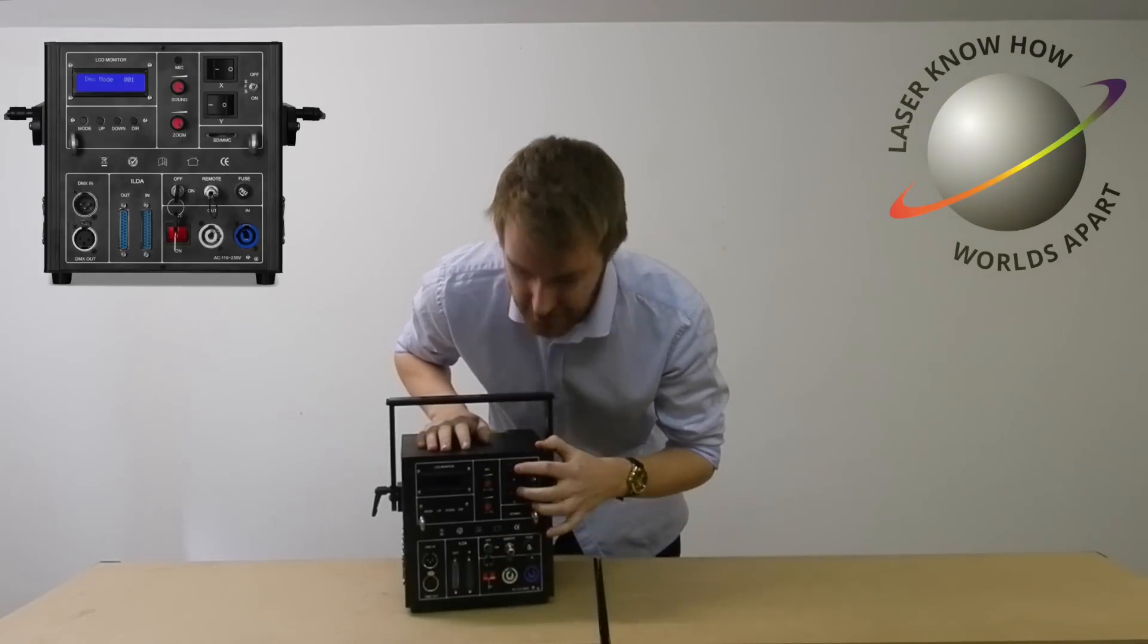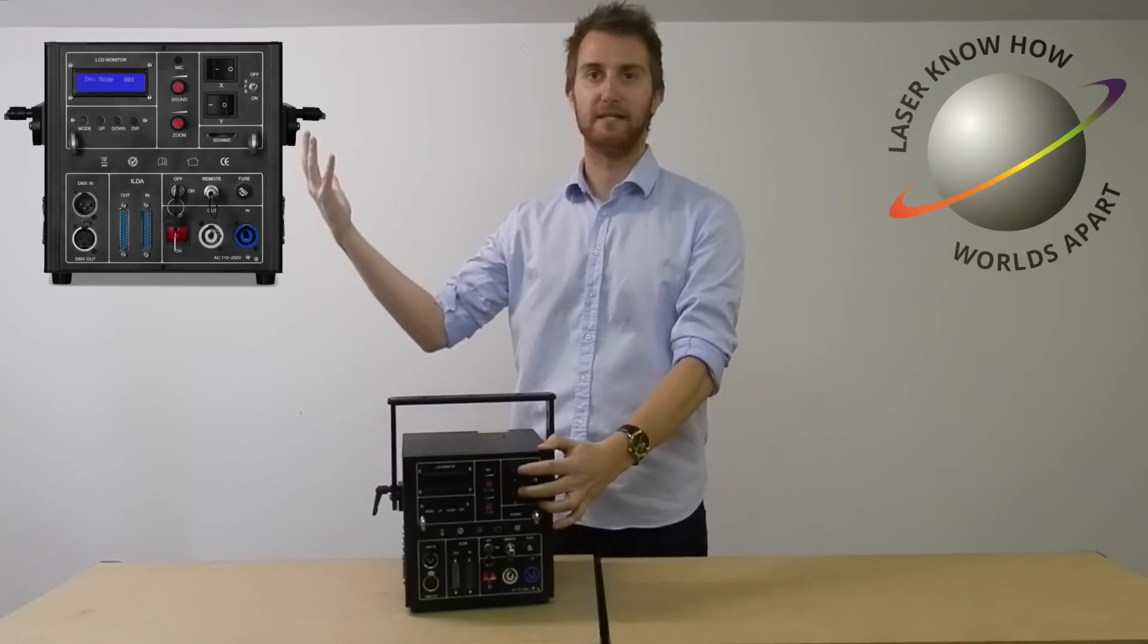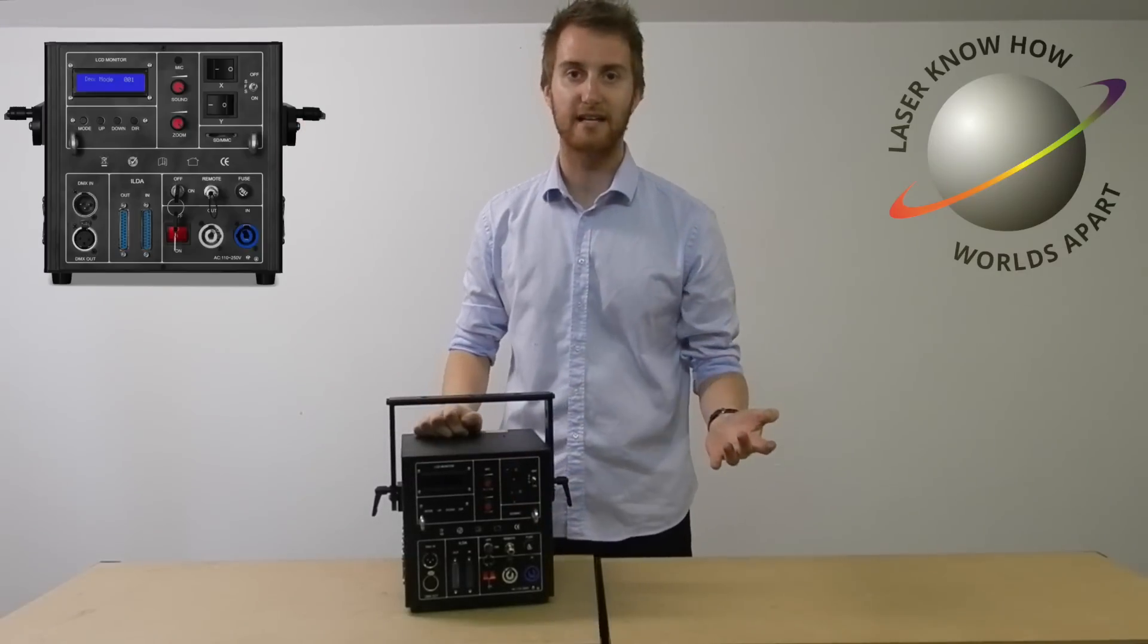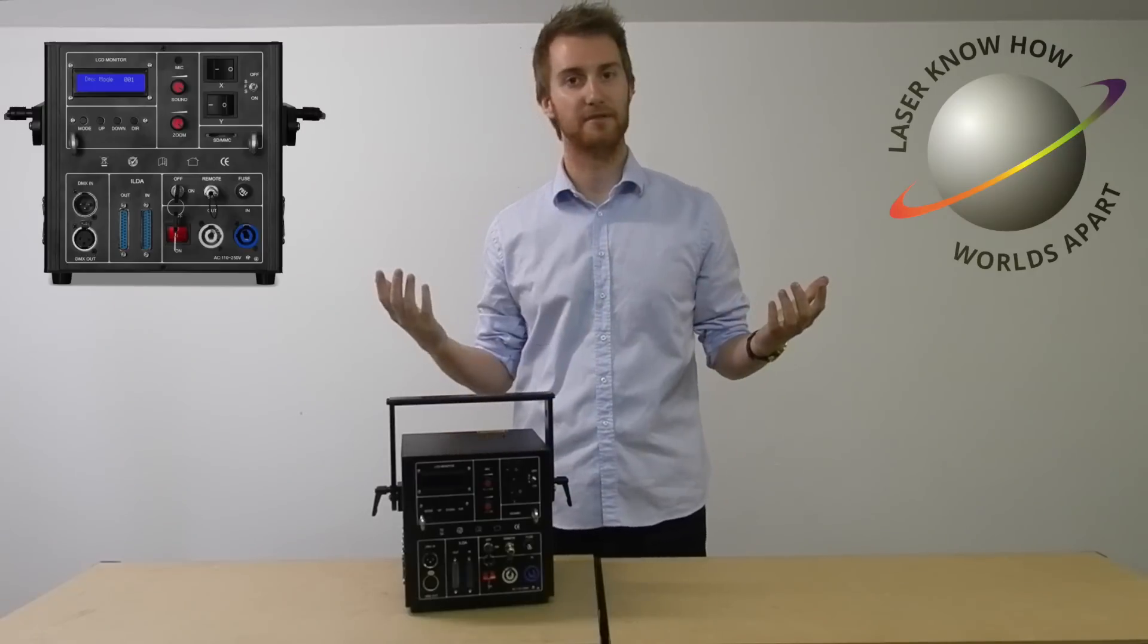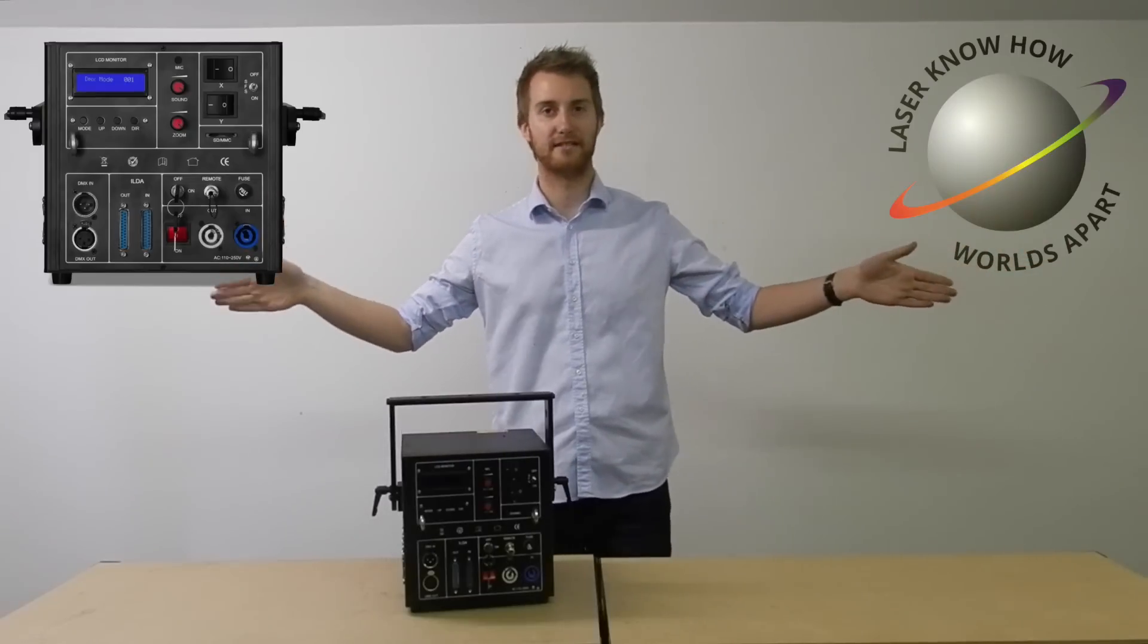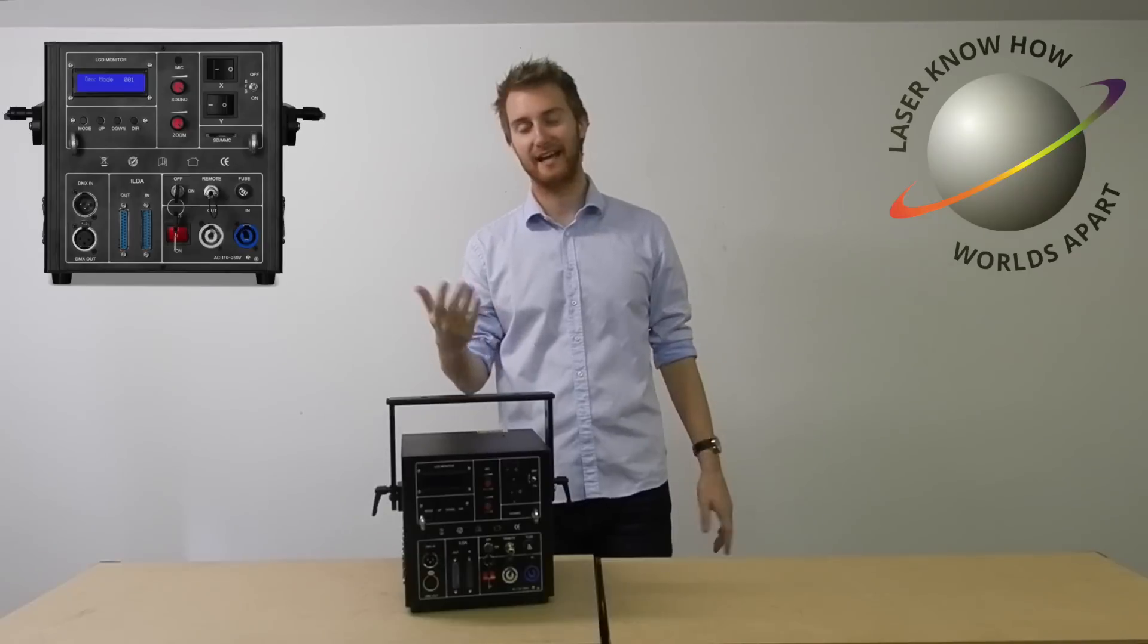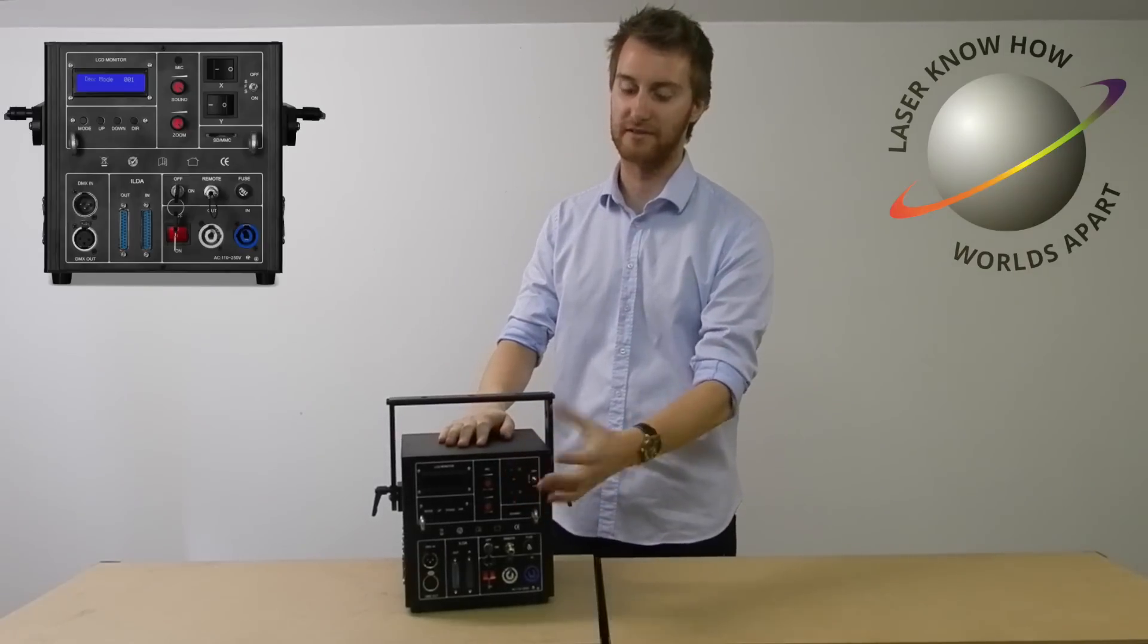We've also got X and Y invert. Going back to that wedding scenario, let's say you're projecting onto a wall but it's backwards, flick the X switch and you've inverted that and it becomes the right way around. It's also perfect when you've got two lasers side by side and they're running on the same run of cable, make them scan together by inverting that X axis. So useful to have that built in.